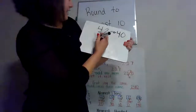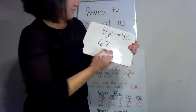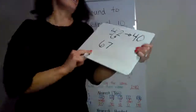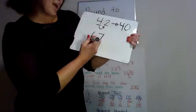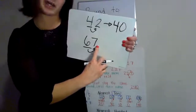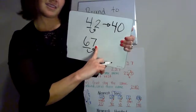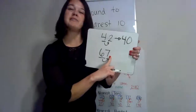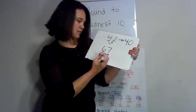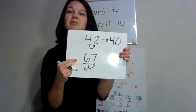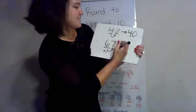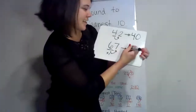If I had the number 67, we're going to round to the nearest tens. We're going to find our place, look next door. Is that five or bigger? Yes. So we're going to add one more. 67 rounds to 70. Good job.